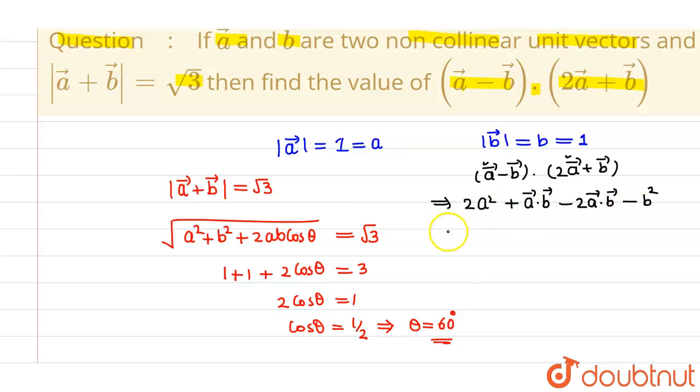Since the value of A and B is 1, so this will be 2 minus 1, which is 1 minus A vector dot B vector, minus 2A vector dot B vector, which will give us minus A vector dot B vector.